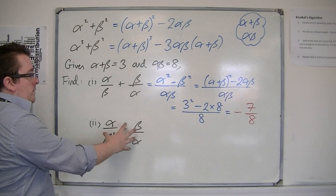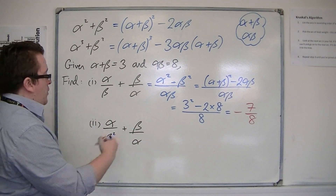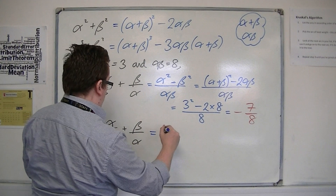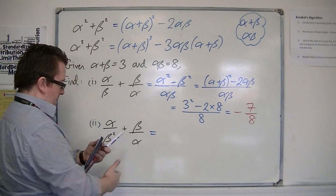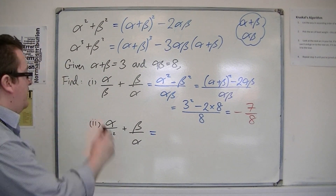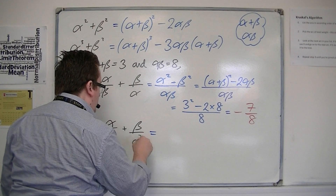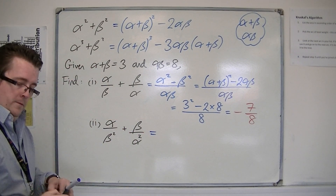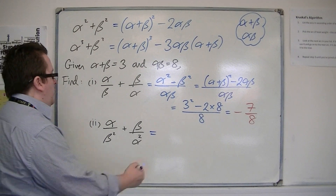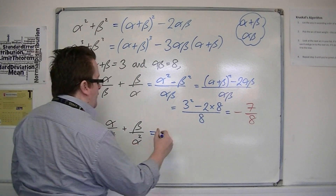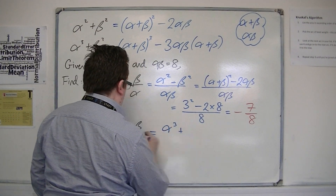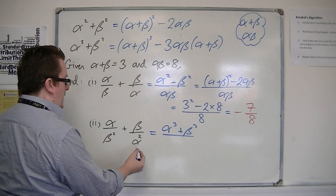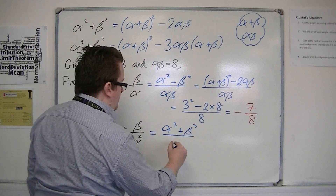Now I want to show an example with cubed. So I'm going to have alpha cubed plus beta cubed, all over alpha squared beta squared.